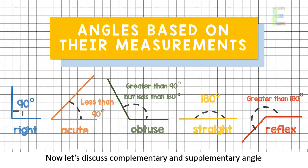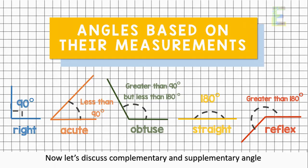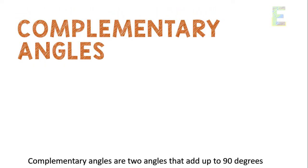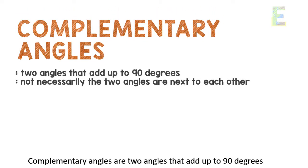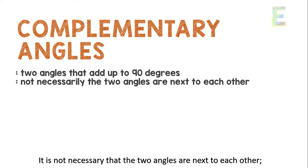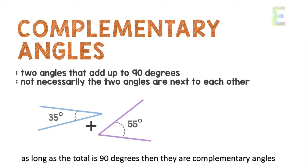Now let's discuss complementary and supplementary angles. Complementary angles are two angles that add up to 90 degrees. It is not necessary that the two angles are next to each other. As long as the total is 90 degrees, then they are complementary angles.